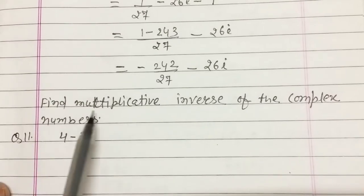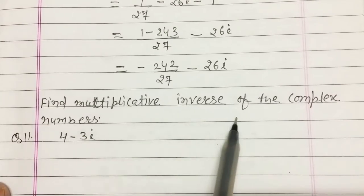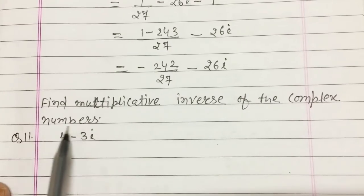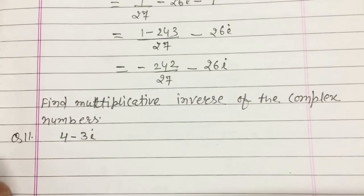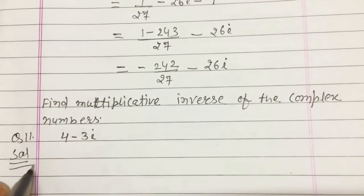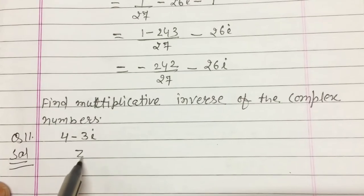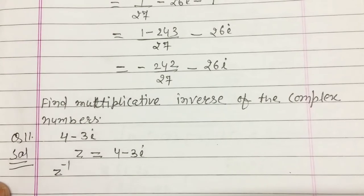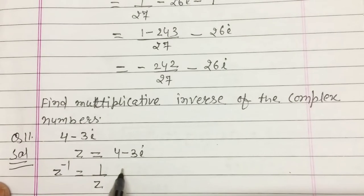Now next question — question number 11: find the multiplicative inverse of the complex number 4 minus 3i. Let z = 4 − 3i. We have to find z inverse, which is equal to 1/z, so you will get 1/(4 − 3i).